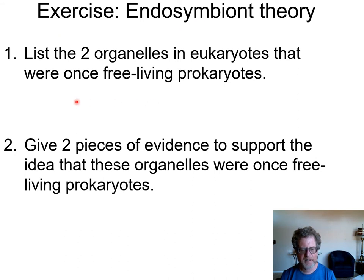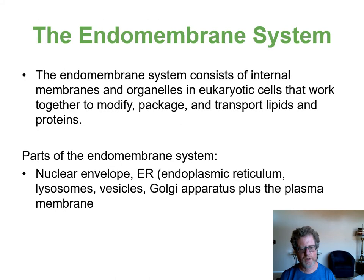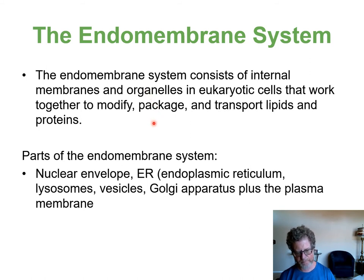Eukaryotic cells are filled with membranes internally. The endomembrane system consists of the membranes inside the cell working together to modify, package, and transport both lipids and proteins. Parts of the endomembrane system include the nuclear envelope, the ER membrane, lysosomes, vesicles, the Golgi apparatus, and the plasma membrane.